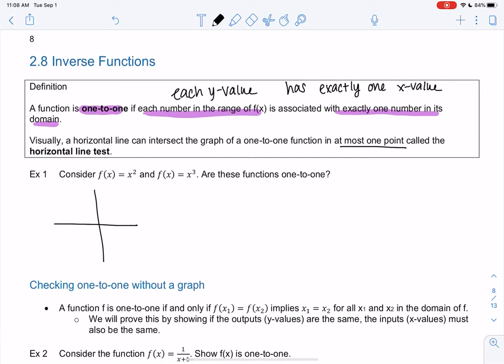So let's look at f(x) equals x squared, we know what that looks like. It's a parabola and it would fail the horizontal line test. If I draw horizontal line, it crosses twice.